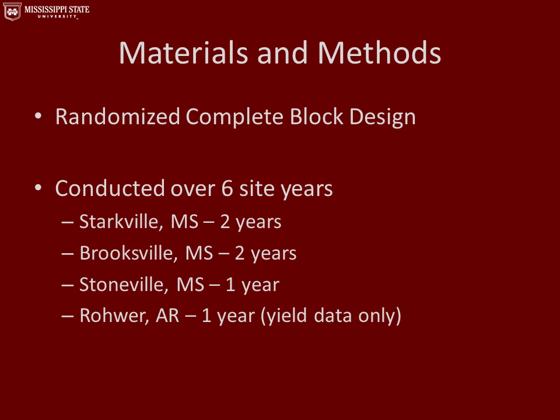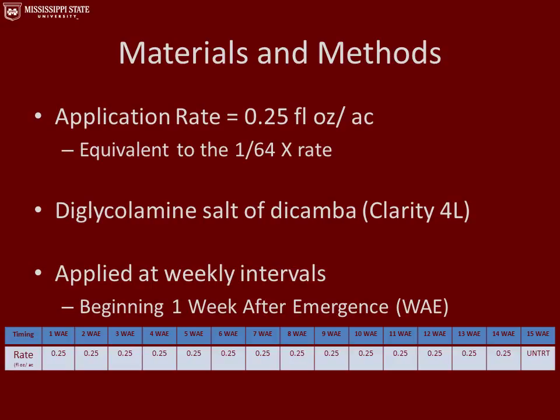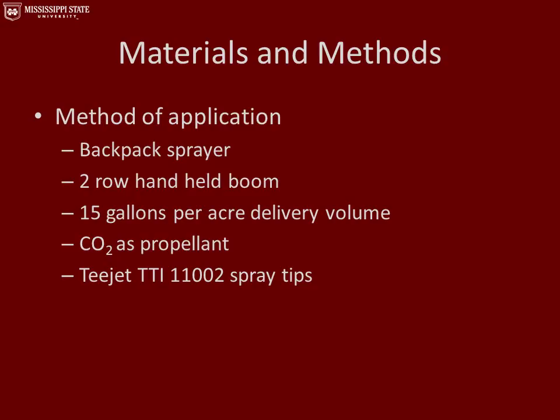We had a randomized complete block design conducted over six site years: two in Starkville, Mississippi; two in Brooksville; one in Stoneville, Mississippi; and one in rural Arkansas. The application rate was equivalent to 0.25 fluid ounces per acre, which is the same as the 1/64x rate in the previous experiment. We used the diglycolamine salt of dicamba, the Clarity 4L formulation. We took that low application rate and applied it at weekly intervals, beginning one week after plant emergence and continuing all the way to 14 weeks after plant emergence. An untreated check received no herbicide. Applications were made using a backpack sprayer with a two-row handheld boom, 15 gallons per acre delivery volume, CO2 as propellant, and T-Jet TTI 11002 spray tips.